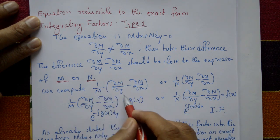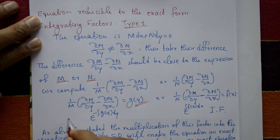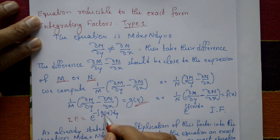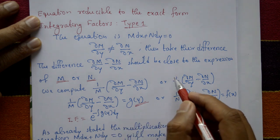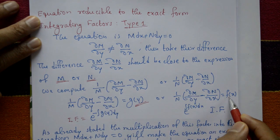Now take the integrating factor as e to the power minus integral of g(y) dy. Next, if close to N, this part is considered f of x.